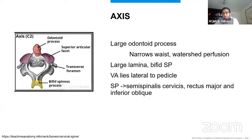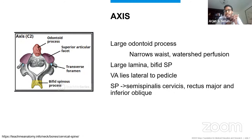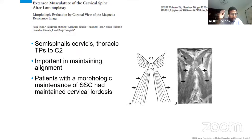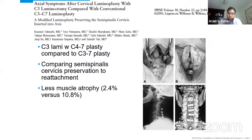When we get to the axis, it has a large odontoid process which articulates with the atlas, narrows to a waist — an area of watershed perfusion — and has a large lamina contiguous with its lateral mass and superior articular facet. The spinous process is large and bifid, serving as attachment for the rectus, oblique, and semispinalis cervicis muscles. Literature surrounding laminoplasty has shown much better outcomes when the semispinalis cervicis insertion is maintained.